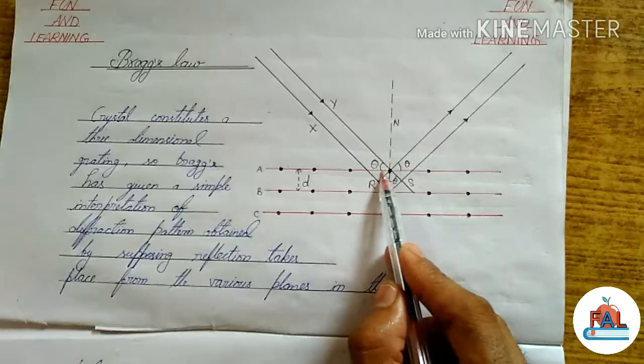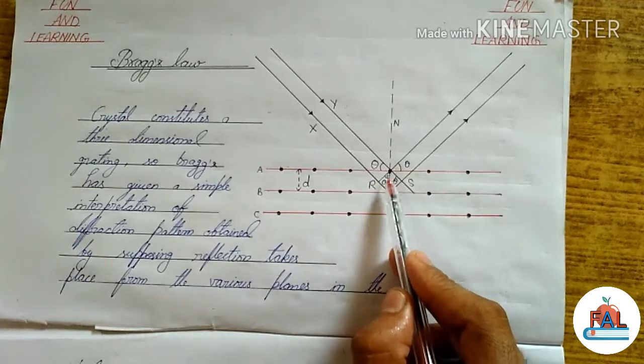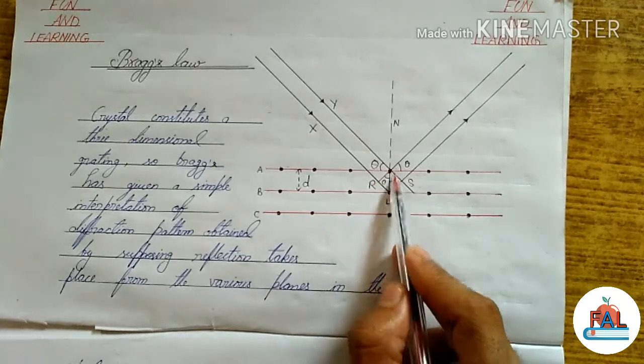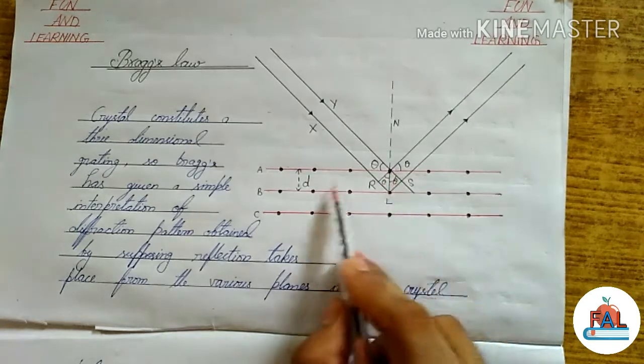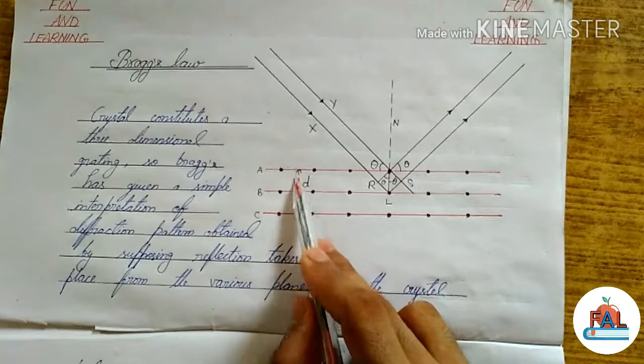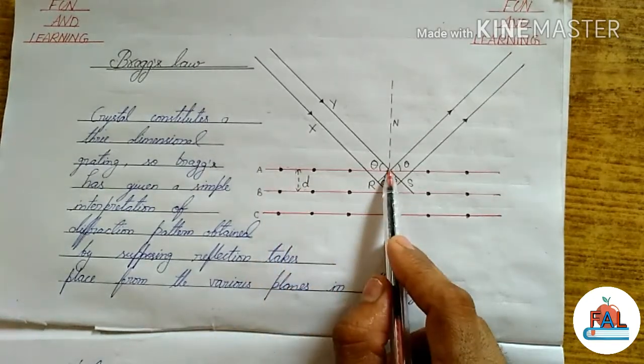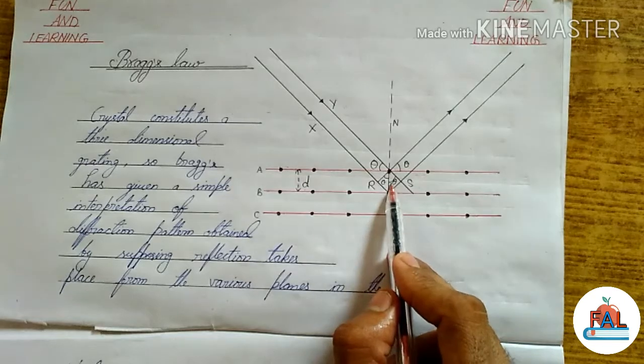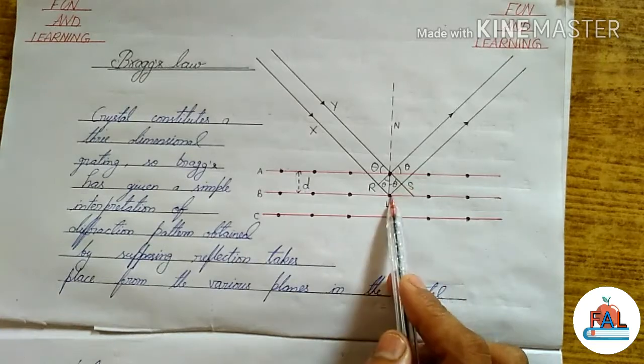In this triangle, the value of RL will be equal to NL sin theta. The value of NL is equal to D, the distance between the planes A and B and B and C. So this will be equal to D sin theta. Similarly, LS will also equal D sin theta.